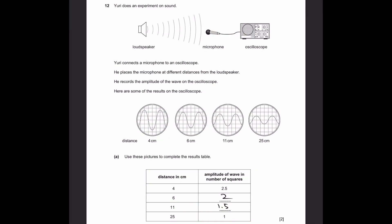Question 12. Yubi does an experiment on sound. He connects a microphone to an oscilloscope and places the microphone at different distances from the loudspeaker, recording the amplitude of the wave. Here are some results. Distance 4 cm, 6 cm, 11 cm, 25 cm. Part A. Use these pictures to complete the results table. For 4 cm, it's 2.5 amplitude. For 25 cm, it's 1.